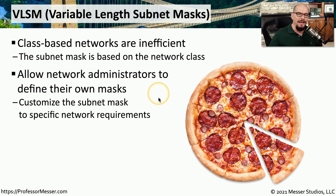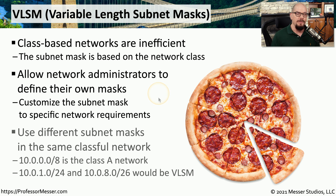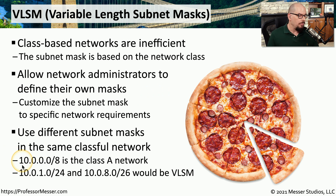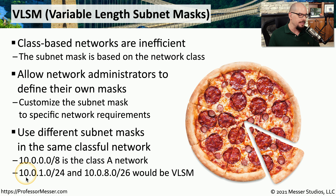You can think of this as having an entire pie and slicing it into smaller pieces — or maybe you have a pizza and you're cutting it into smaller pieces. You're able to customize depending on the requirements for the number of networks and hosts on your network. Variable length subnet masking allows us to use different subnet masks depending on the requirement. So although a network of 10.0.0.0/8 would be a class A network with a 255.0.0.0 subnet mask, VLSM allows us to set a subnet mask of 10.0.1.0/24 or 10.0.8.0/26.